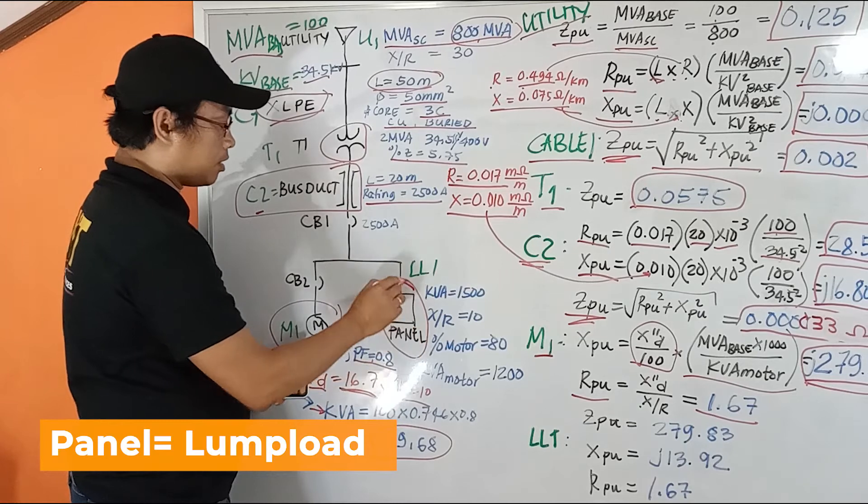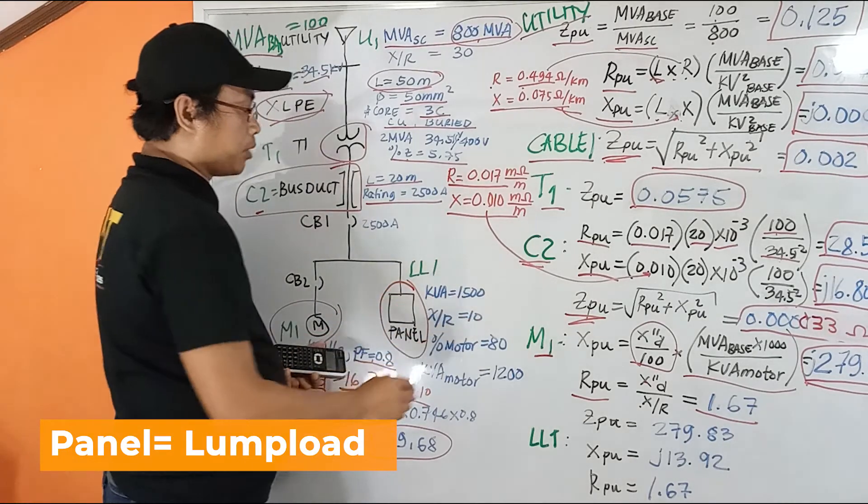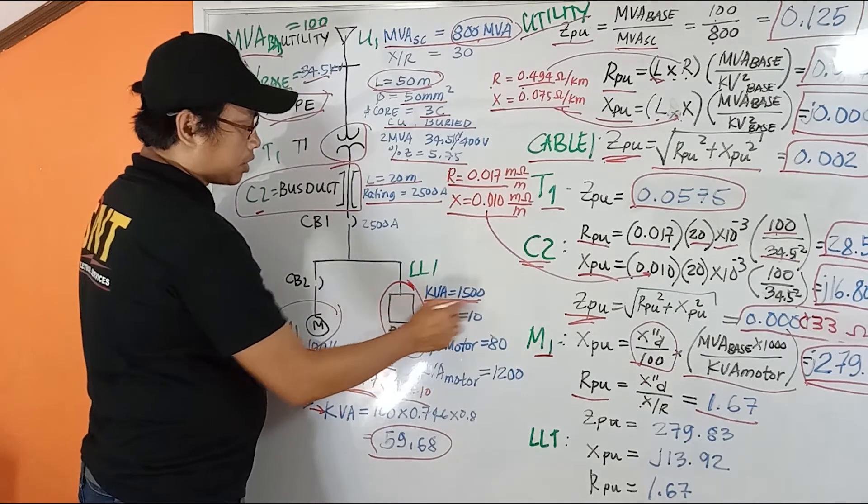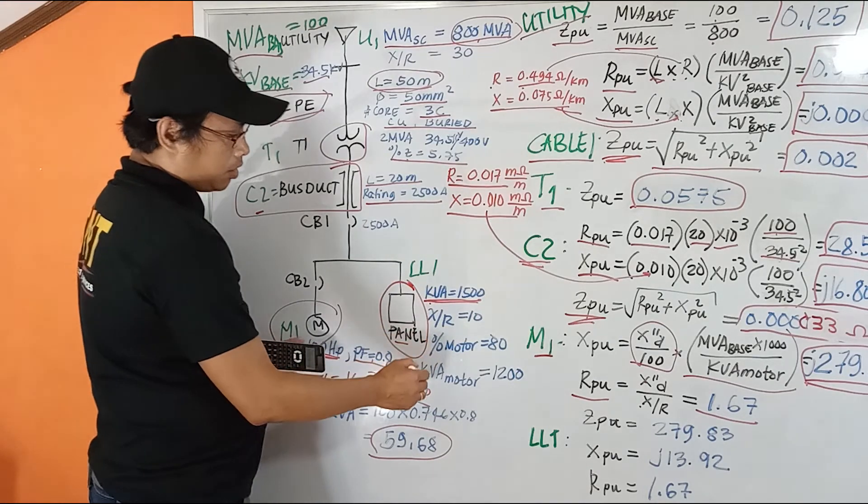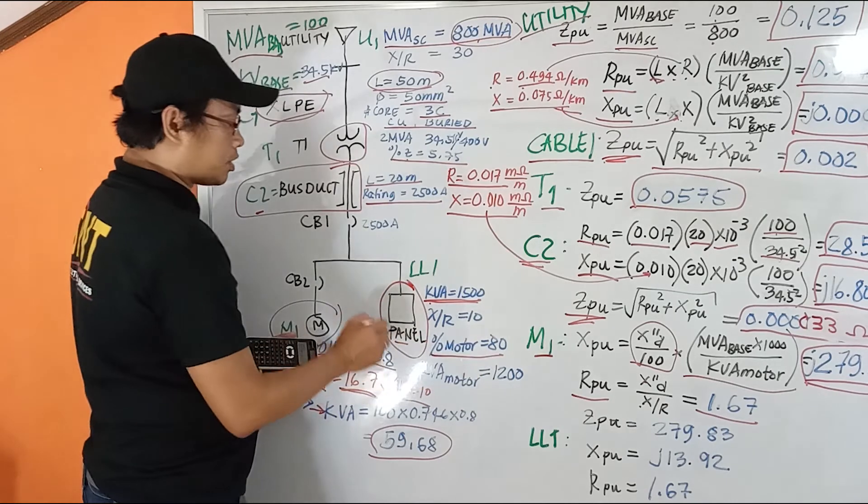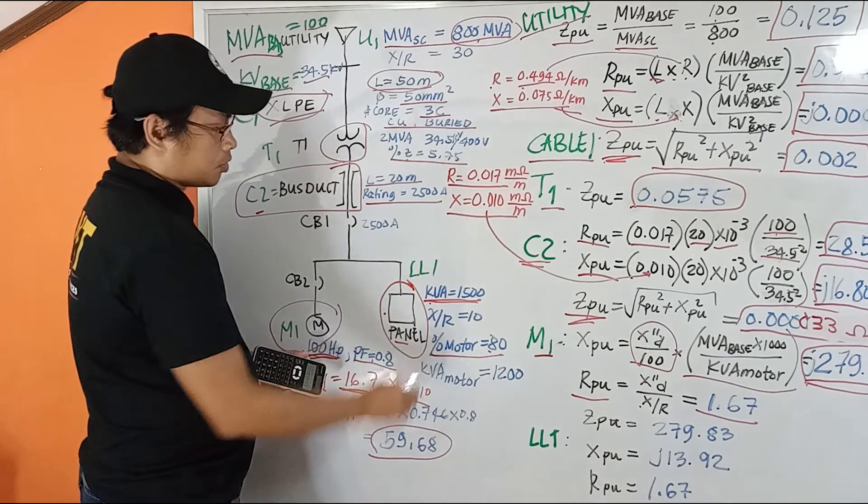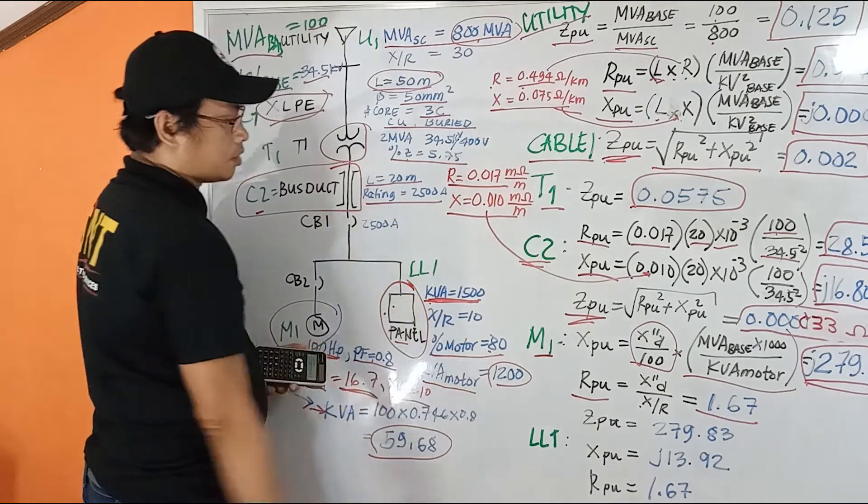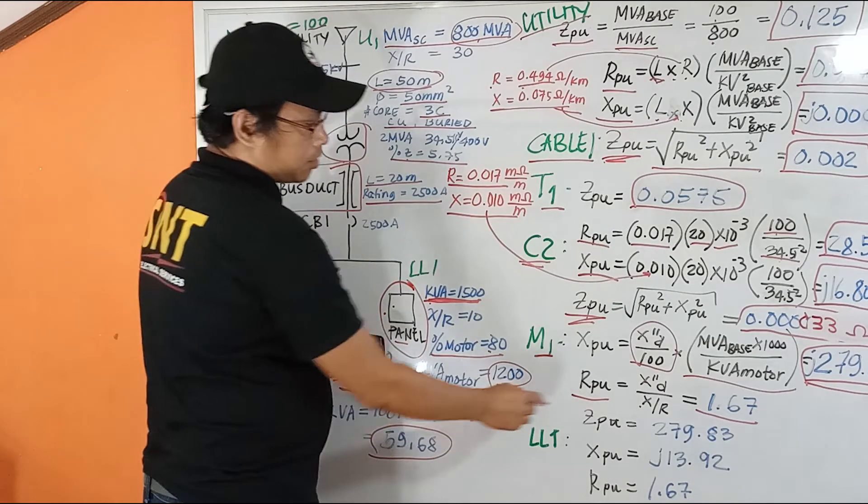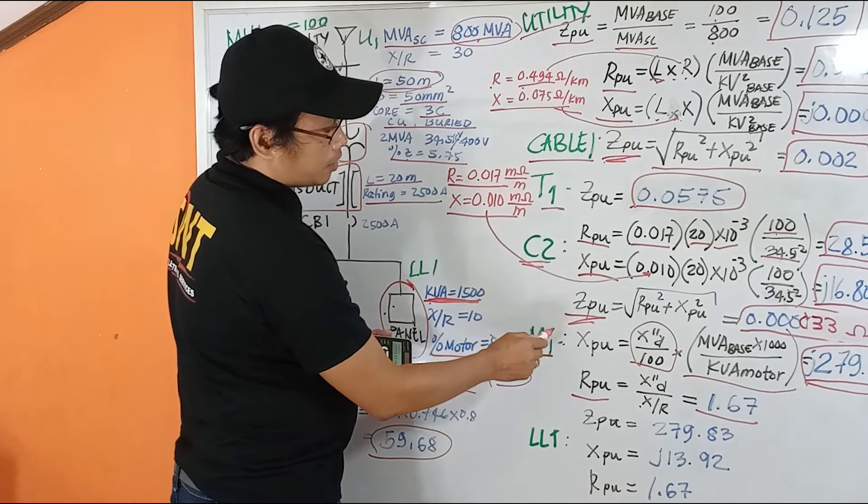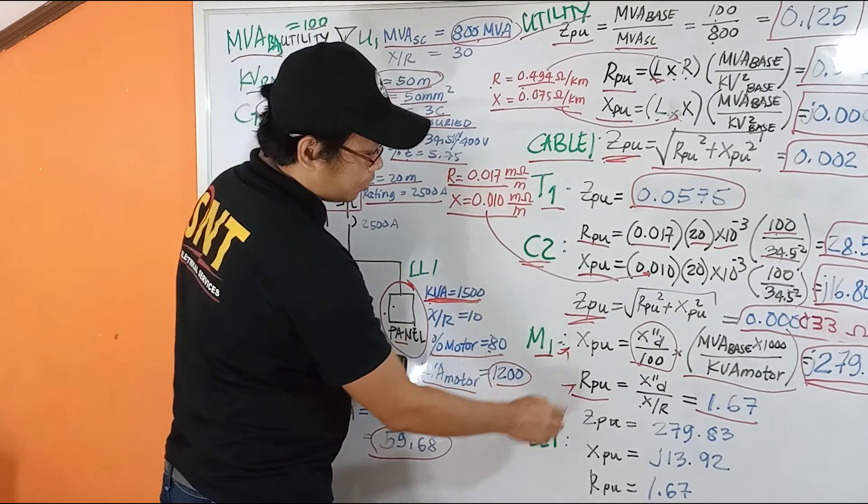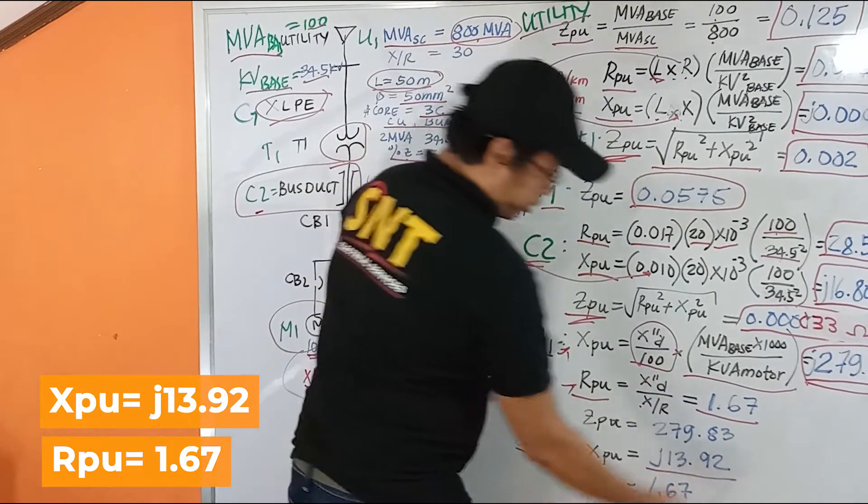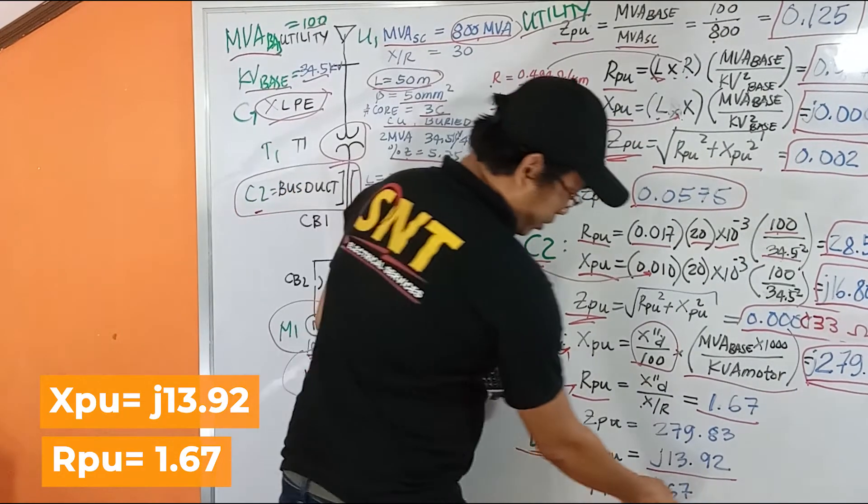Now, this panel is considered as lump load. So we calculate how much percent is motor for this panel. It was given the MVA of motor or percent motor on this panel load is 80%. So if this is the total load for this panel, you get the MVA motor at 200 MVA. Then substitute it in our formula here, XPU and RPU for our lump load. We calculate that.